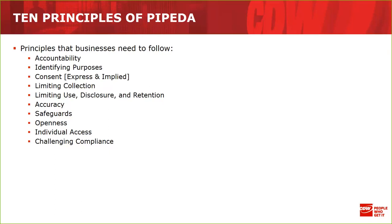Sixth: Accuracy — personal information must be as accurate, complete, and up-to-date as possible to properly satisfy the purposes for which it is used. That's why passports, driver's licenses, and health cards all expire — not just to collect renewal fees, but to keep information current. Your address might change, your last name might change. An accurate picture and accurate information of an individual traveling needs to be updated.